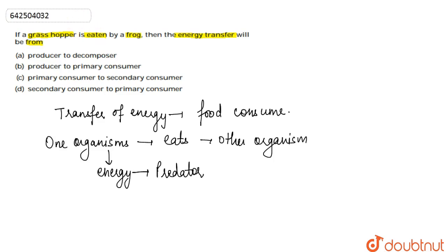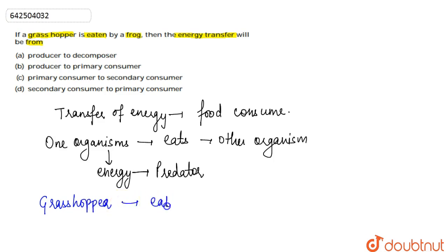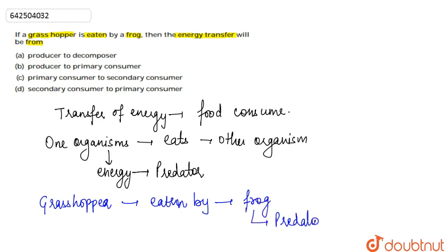Here the grasshopper is eaten by the frog, so the frog is the predator. This means that the frog will get the energy. So the transfer of energy, or the flow of energy, will occur from the grasshopper to the frog.